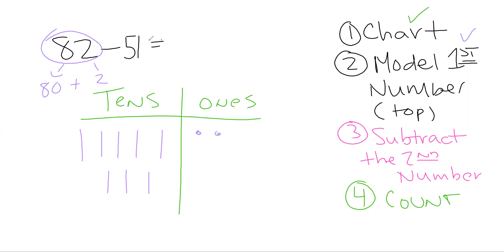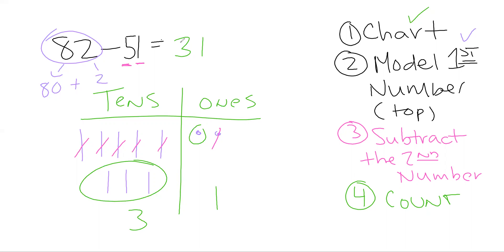Now this is where we actually only subtract the second number, and I can just use place value to do that. In 51, I see there's a one in the ones place, so I'm going to cross out one. I see there's a five in the tens place, so I'm going to cross out five: one, two, three, four, five. And now we just count what's left — I have one here and three here. So my answer is 31.